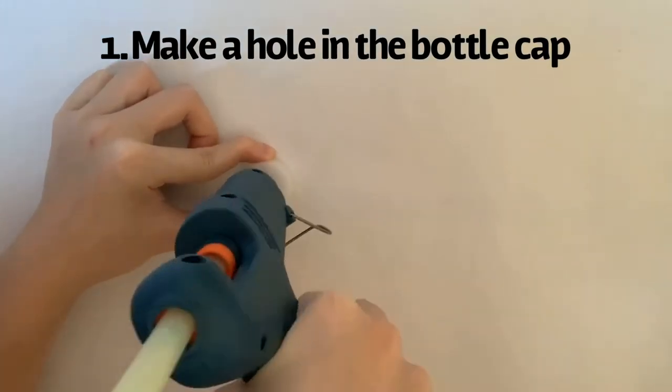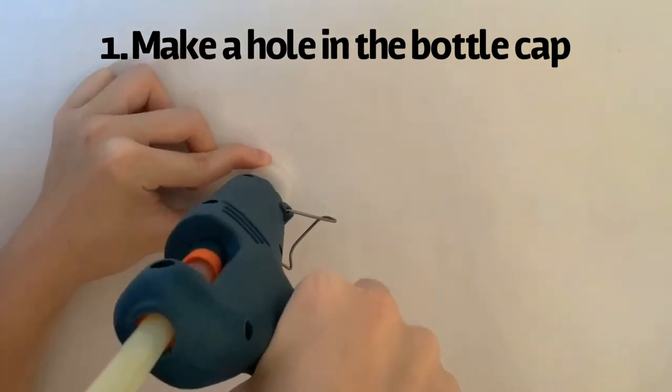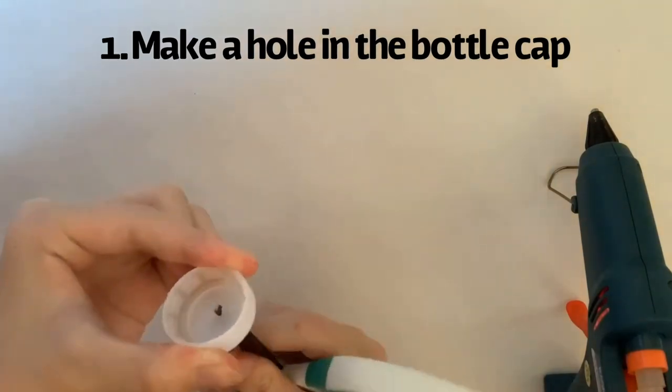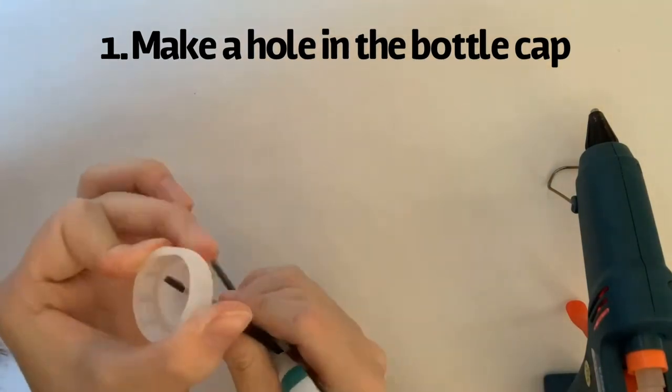You can use scissors to make the hole bigger if you need to, but if you have a smaller and thinner bottle cap, you can simply poke the hole with your scissors.